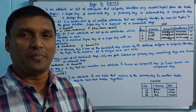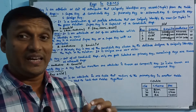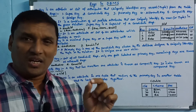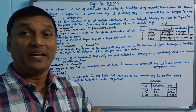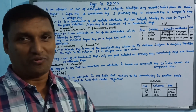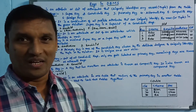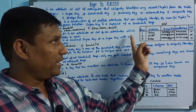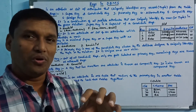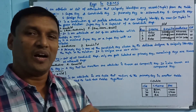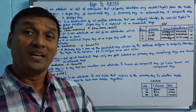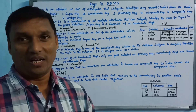Simple definition: a key is an attribute or a group of attributes that uniquely identifies any record. A complete record should not be duplicated. So in a table, the key is used to maintain unique records. The key is an attribute — it is compulsory.